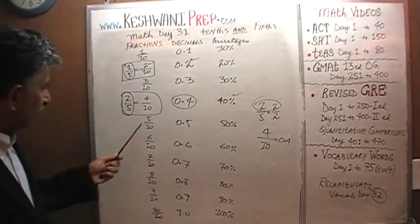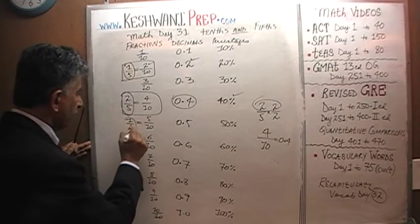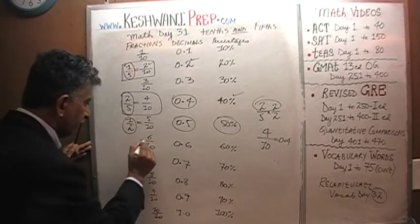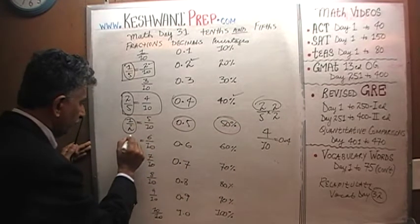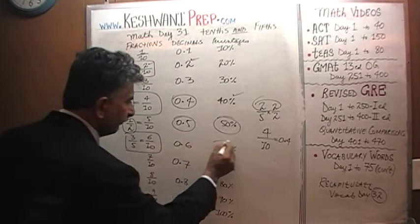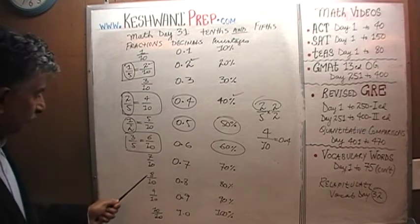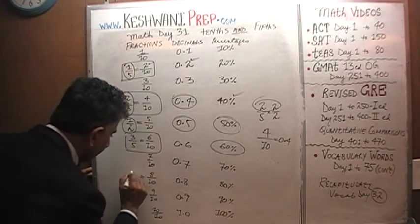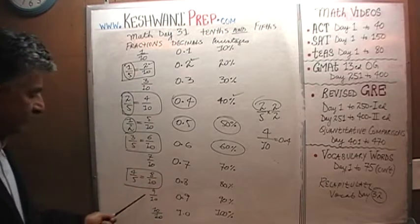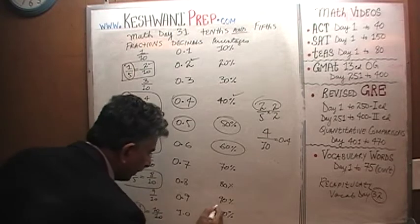5 tenths is very straightforward — if you reduce it, it becomes a half, and everybody knows that half is 0.5 or 50%. 6 tenths reduces to 3 fifths, and 3 fifths is 60%. 7 tenths cannot be reduced. 8 tenths reduces to 4 fifths. 9 tenths remains, and 10 over 10 is just 1, which is 100%.